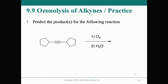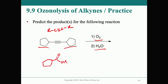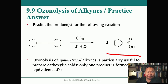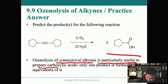Let's predict products: we have an alkyne in the middle of a cyclopentane alkyl group — when treated with ozone and water, we get two equivalents of cyclopentane with a carboxylic acid right where the alkyne was, since both sides are identical.